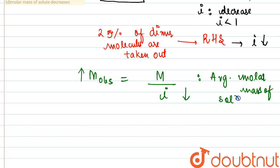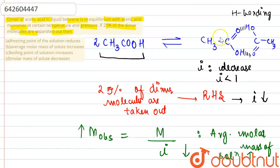Because they are in inverse relation, so if we check the statement, the second statement would be correct that average molar mass of the solute increases because i value is decreasing on reducing the dimer molecules by 25 percent.